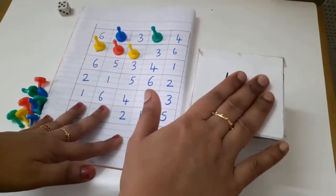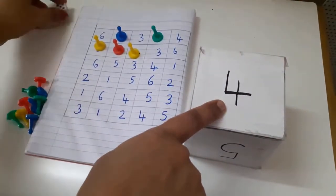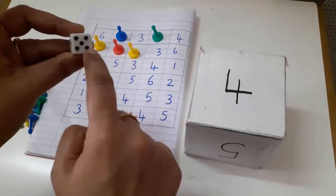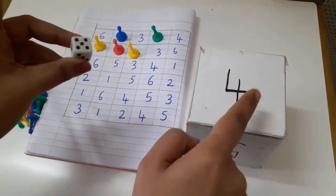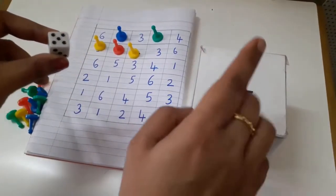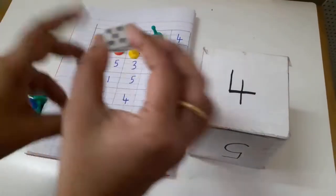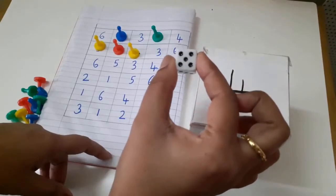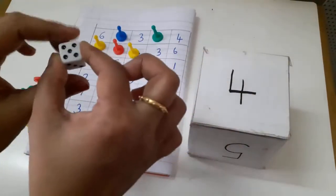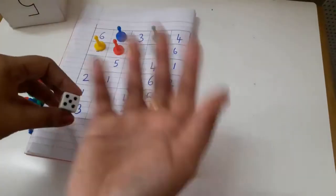So they can roll here. The difference is here you have dots they have to count, but here they have the number given directly. So once they are very familiar with these ones where the number is given directly, you can tell them to use these ones.